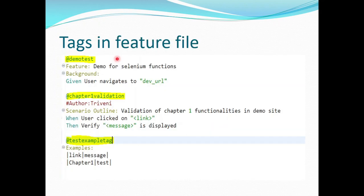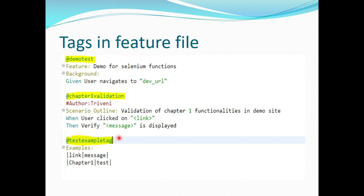In this screenshot, you can clearly see the way tags are defined in a feature file. First, you can define a tag at the feature level — if you define a tag above the Feature keyword, it will execute all the scenarios under that feature. The next is scenario-level tags, where you define the tag at the individual scenario level. For example, '@ChapterOneValidation' is defined for a particular scenario, and when you want to execute it, you use that tag. You can also define tags at the Examples level to differentiate multiple sets of test data, so only the particular test data set associated with that tag will execute.